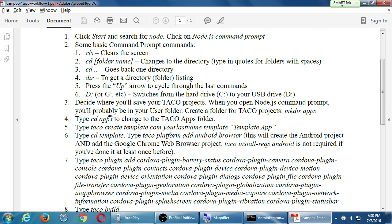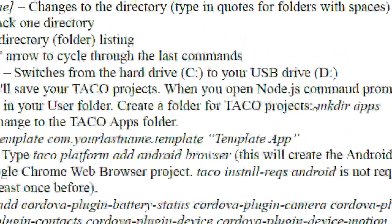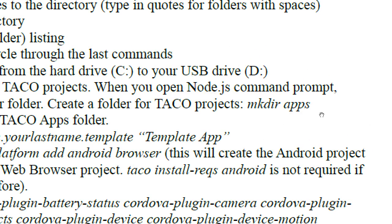We need to decide where we're going to save our projects. I have a flash drive plugged in and I want to save my projects there. I can create directories in the command prompt using mkdir — make directory — followed by a name. In my example, I made a folder simply called apps. Because you'll need to type that folder name repeatedly, don't call it something like "My Apps Summer 2016" — just keep it simple.